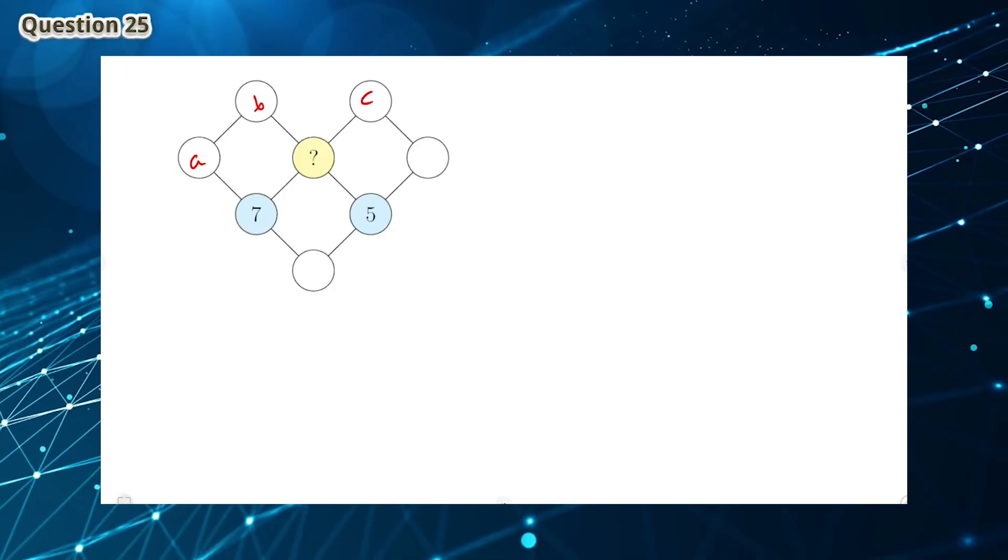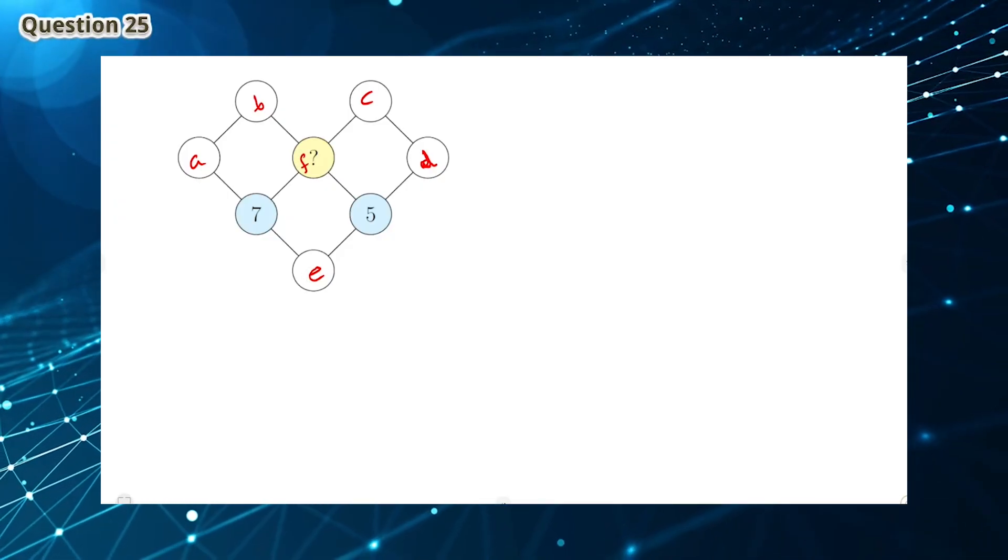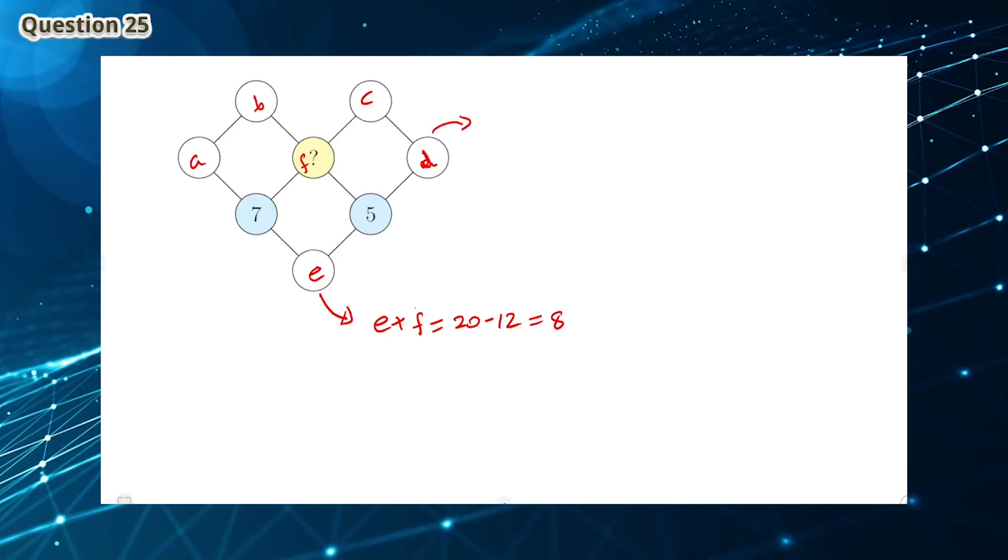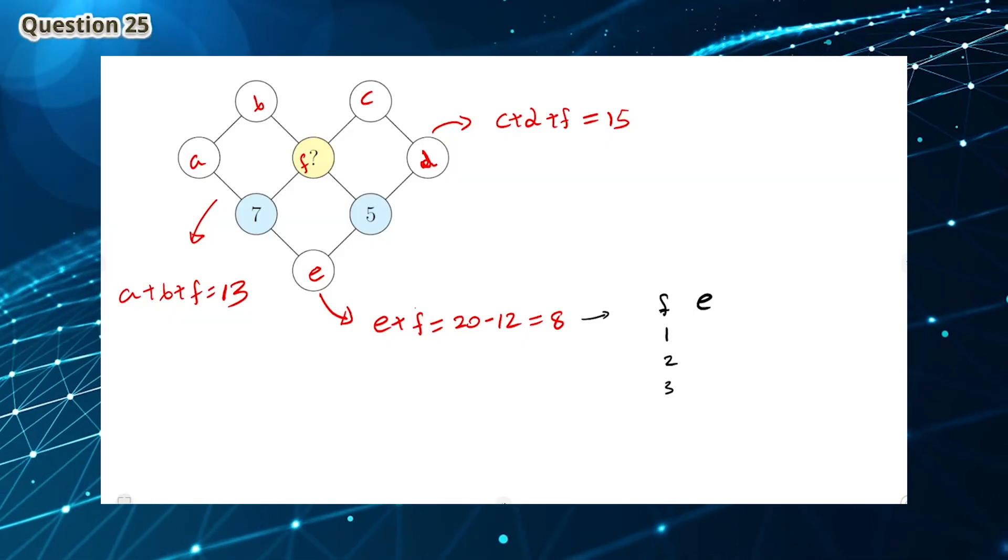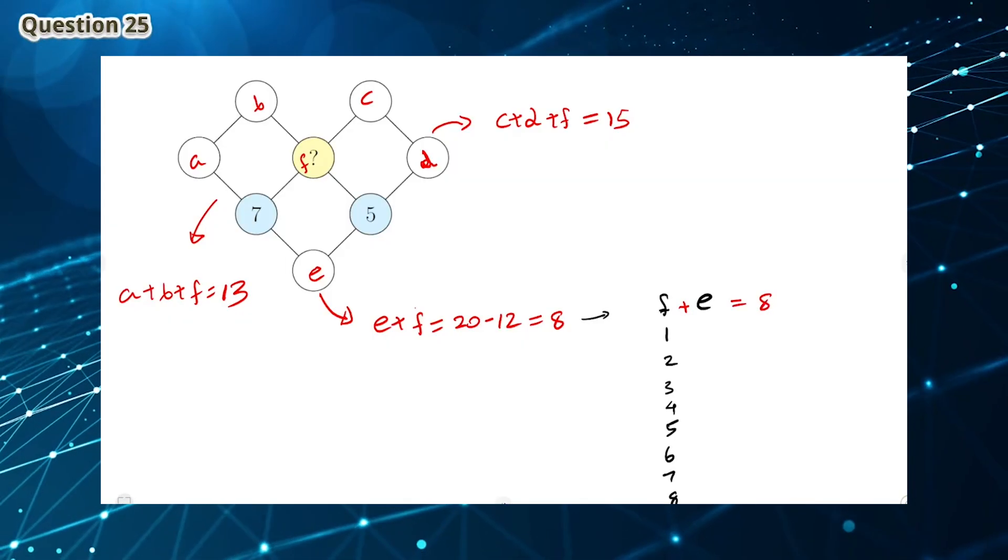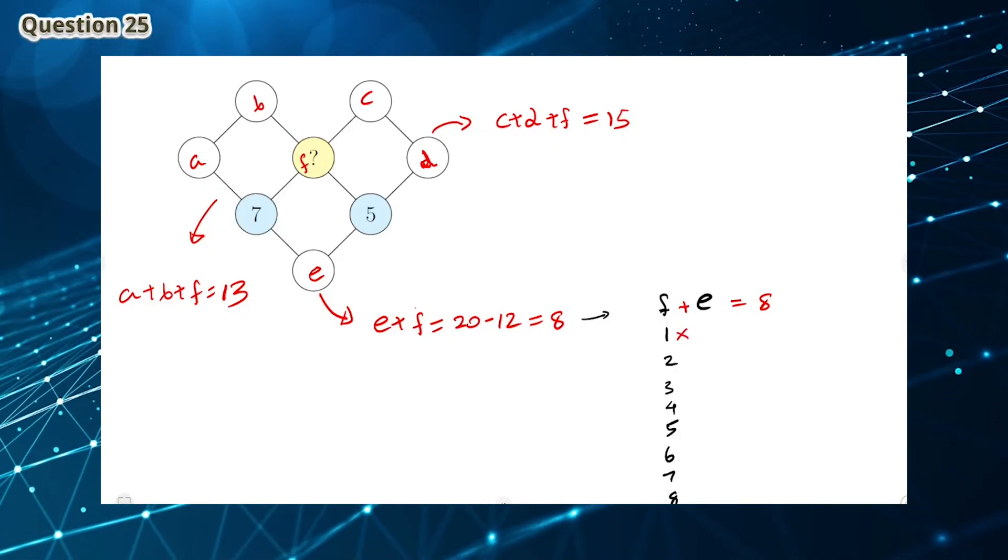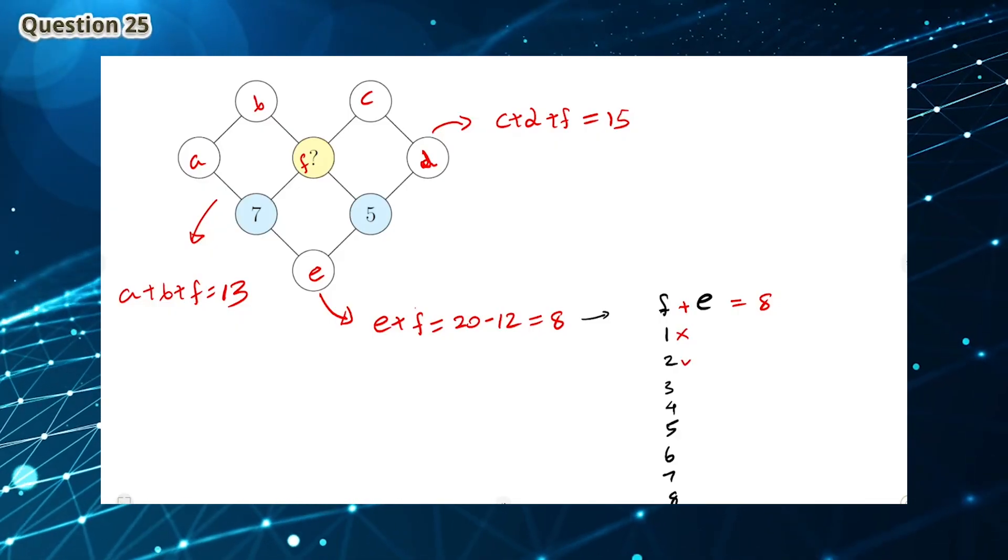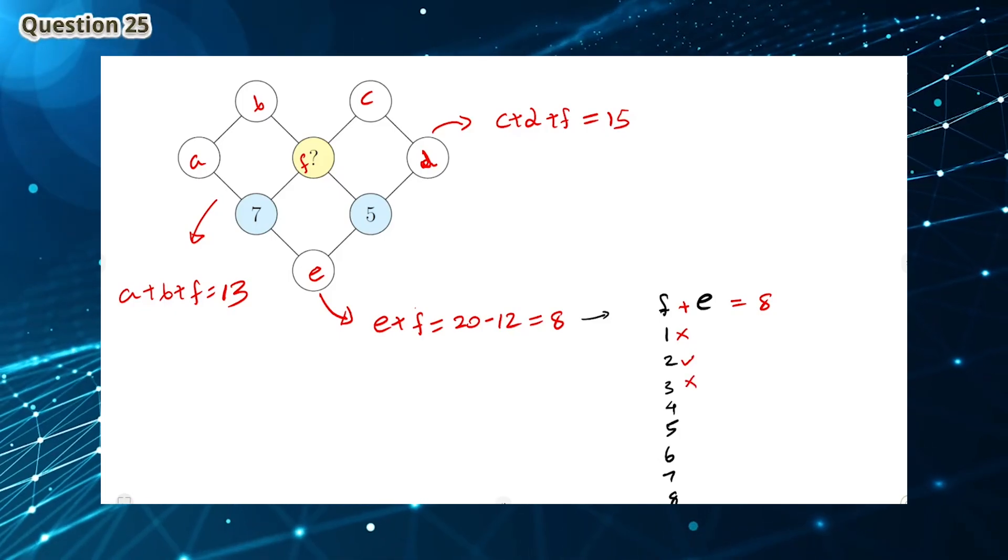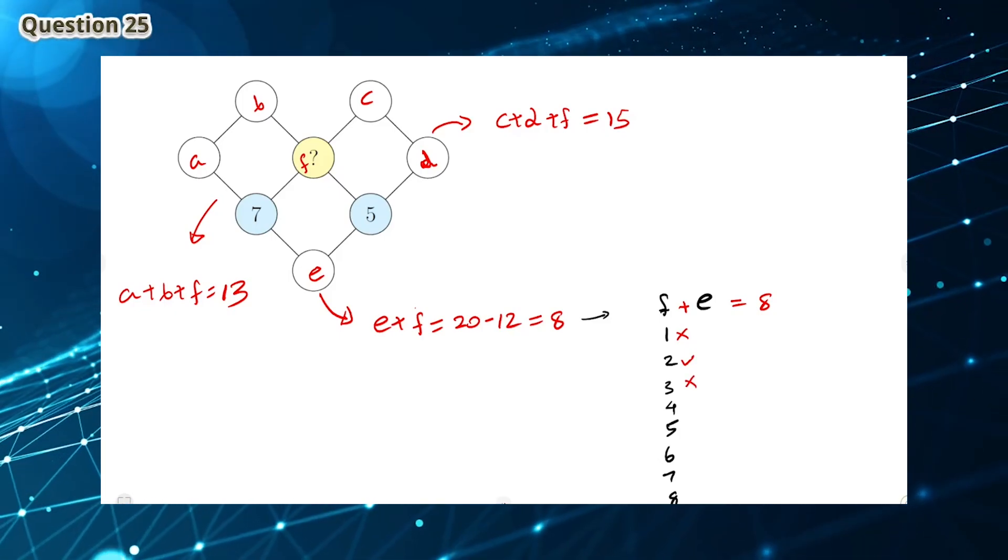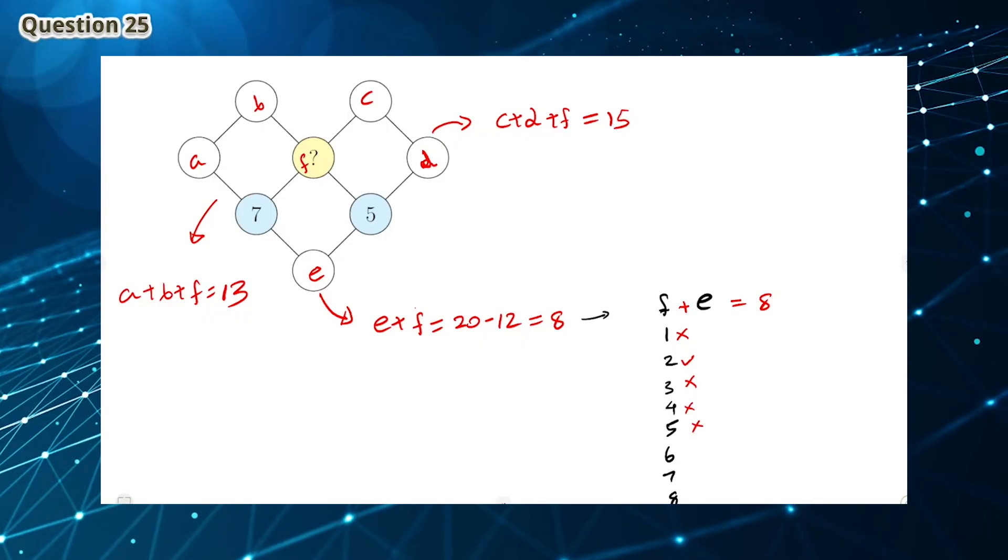Question 25: As you can see, first we have to label the following diagram as seen. Since we know that each square adds up to 20, we know that E plus F is 8, C plus D plus F is 15, and A plus B plus F is 13. So let's get the equation F plus E equals 8 to try and solve this question. If F is 1, E would be 7. This wouldn't work because of a repeated digit. If F is 2 then E would be 6. This could be a possible scenario. If F is 3 and E is 5, there's a repeated digit of 5. If F is 4 then E must be 4 as well, so there's another repeated digit.